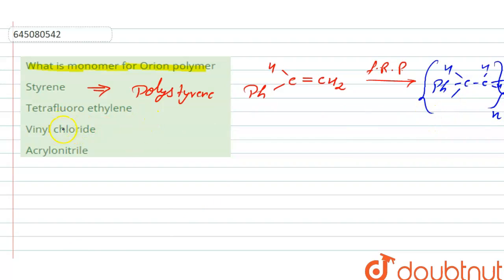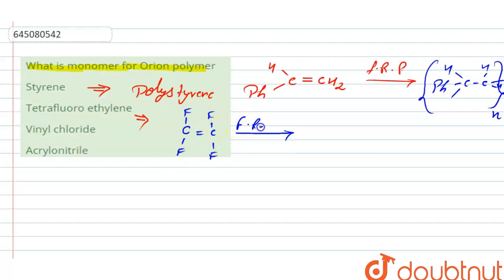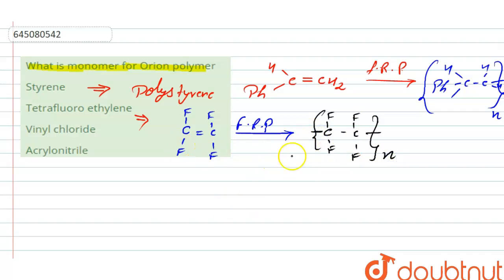In option B, we have tetrafluoroethylene. Its structure is CF₂=CF₂. This is the monomer of polytetrafluoroethylene (PTFE). By free radical polymerization, we get the repeating unit –[CF₂–CF₂]ₙ–, which is polytetrafluoroethylene.